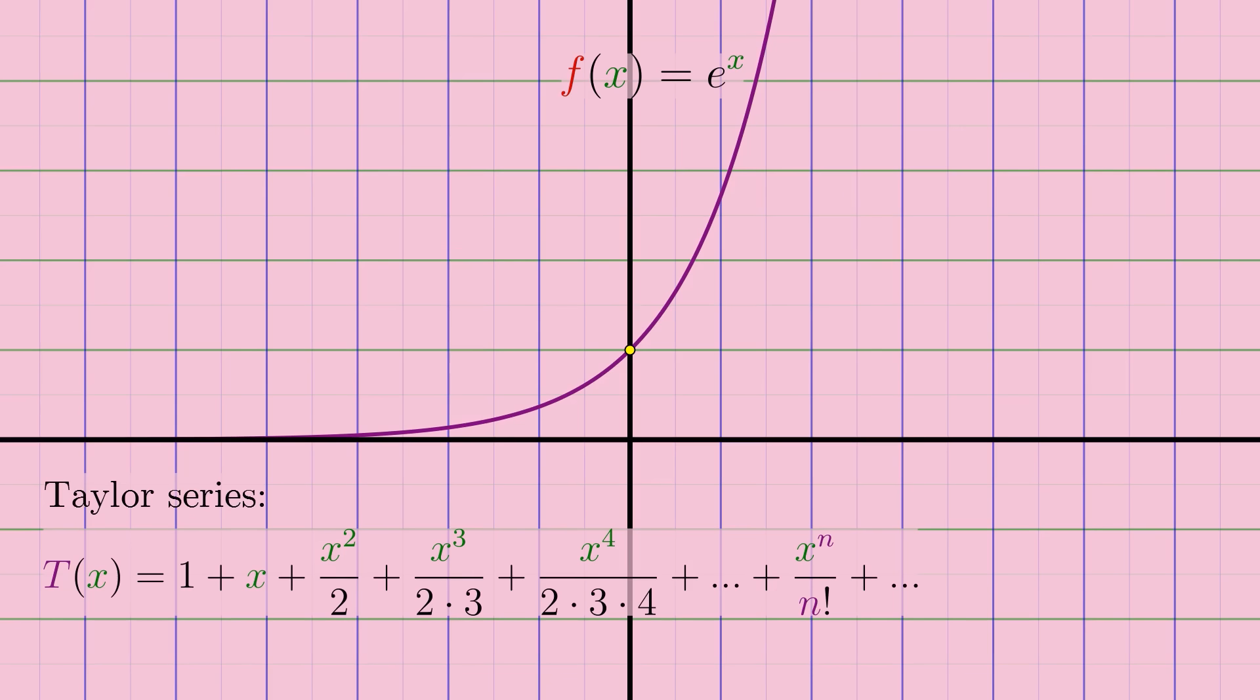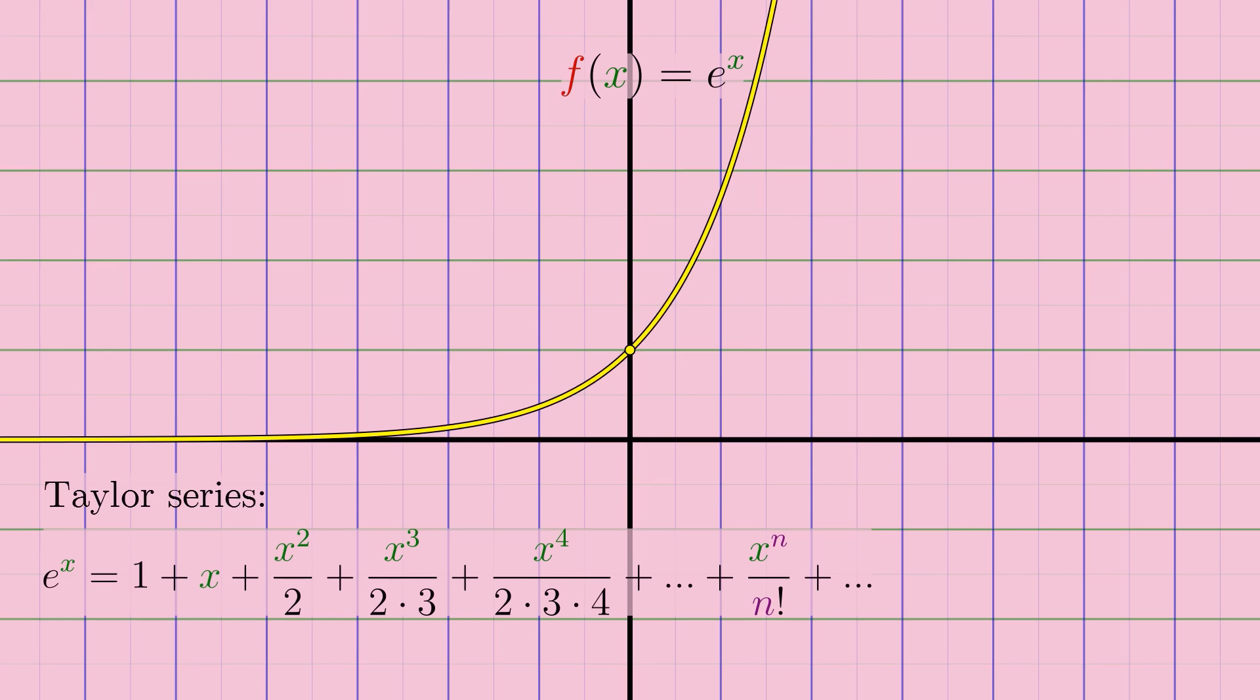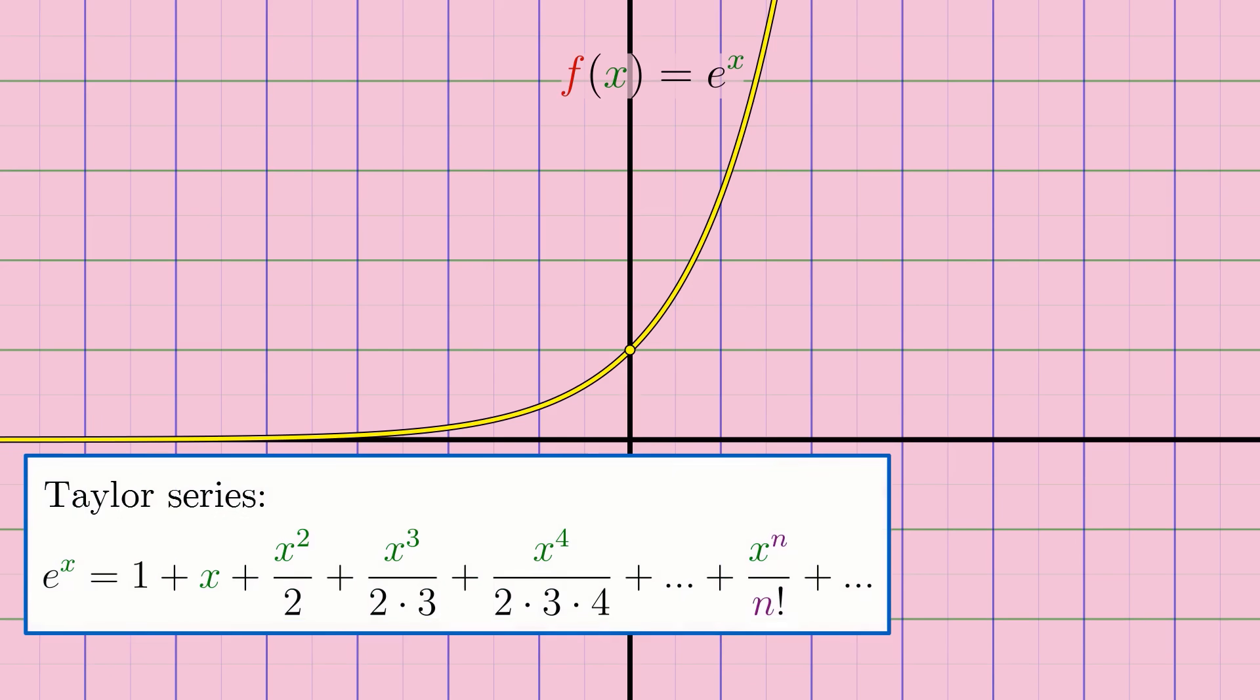And at this point, the series doesn't just approximate the function near x equals zero, but actually equals it for all x values for which the Taylor series converges. And it just so happens that the Taylor series for e to the x at x equals zero converges for all possible values of x, meaning e to the x precisely equals its Taylor series for all values of x both near and far away from x equals zero.